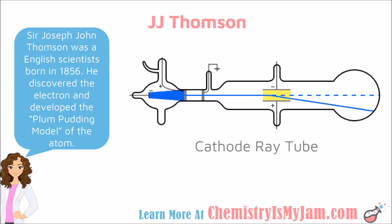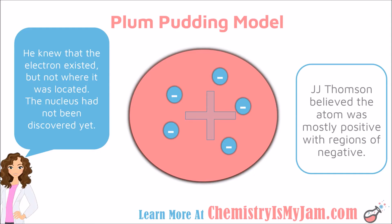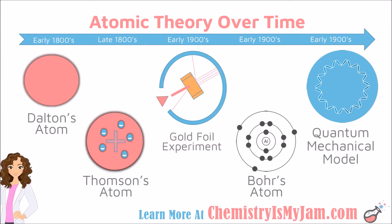This was huge for the concept of the atom — now we know that within the atom there's something negative. J.J. Thompson developed a new model called the plum pudding model. It said that the atom is still a sphere that is mostly positive, with chunks of negative spread throughout. He knew the electron existed but was a little off base on where it was located. He named it the plum pudding model because that was a popular food at the time — you could think of it now as chocolate chip cookie dough, where the dough is the positive region and the chocolate chips are the negatives spread throughout.